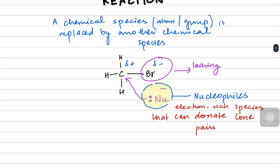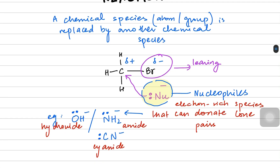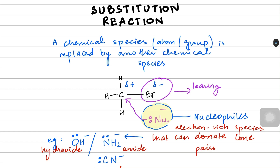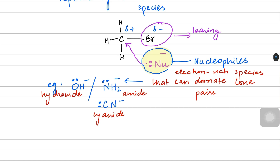Good examples of nucleophiles include the hydroxide group (OH⁻), the amide group where nitrogen has a lone pair, and cyanide (CN⁻). So hydroxide, amide, and cyanide are all good nucleophiles. Coming back to the substitution reaction — since the halogen atom is replaced by a nucleophile, the proper name for this reaction is nucleophilic substitution.